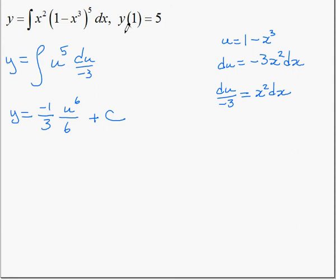Now we need to be careful not to substitute in here - this is for u, this is y(x). So we need to replace u with our x values. So this is -(1 - x³)⁶/18 + C.